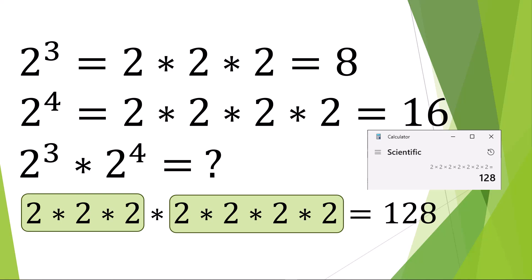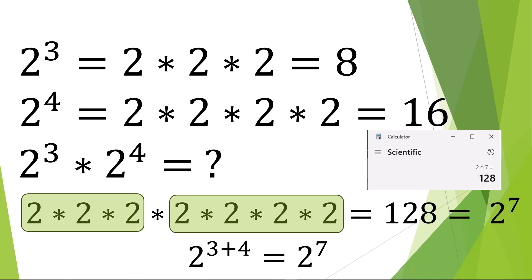A third way to express the product of these two powers is to add the exponents, 3 plus 4, to make the expression 2 to the 7th, also 128. This technique of adding the two exponents to achieve the new power is called the product rule in the laws of exponents.